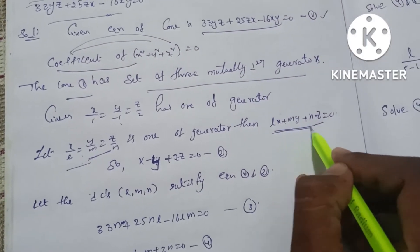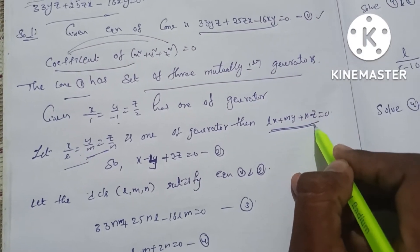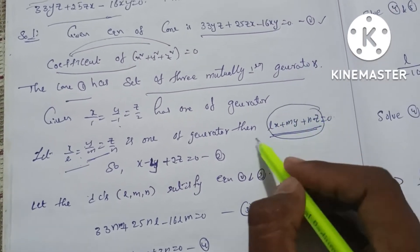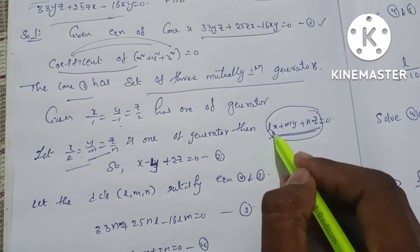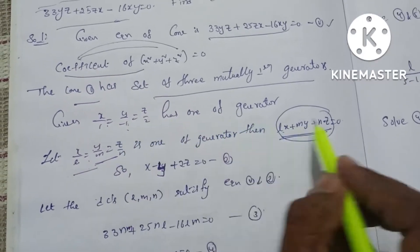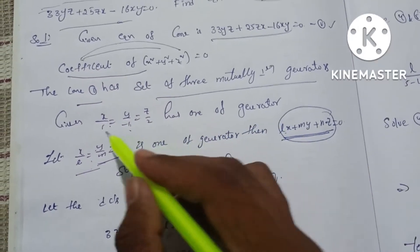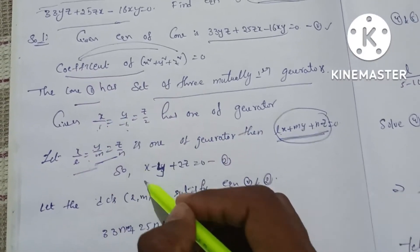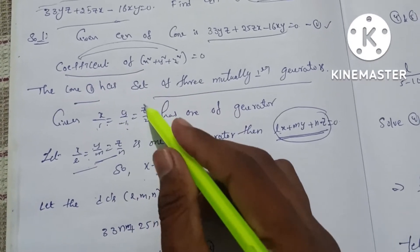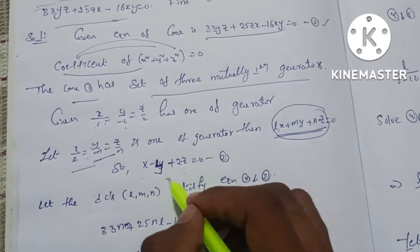The equation is lx + my + nz = 0. So l = 1, m = −1, n = 2. Therefore: 1·x − 1·y + 2·z = 0, giving x − y + 2z = 0. This is equation 2.